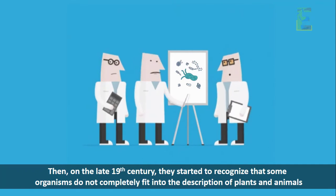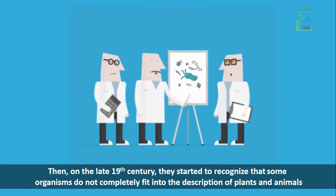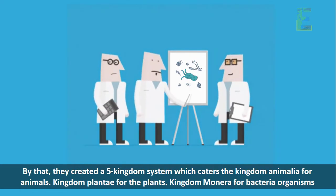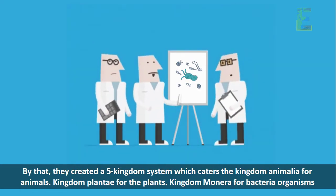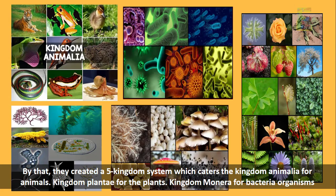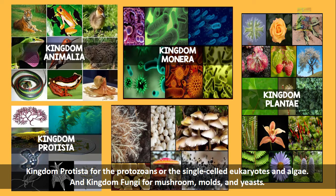Then in the late 19th century, they started to recognize that some organisms do not completely fit into the description of plants and animals. By that, they created a five-kingdom system which includes kingdom Animalia for animals, kingdom Plantae for plants, kingdom Monera for bacteria organisms, kingdom Protista for the protozoans or single-celled eukaryotes and algae, and kingdom Fungi for mushrooms, molds, and yeasts.